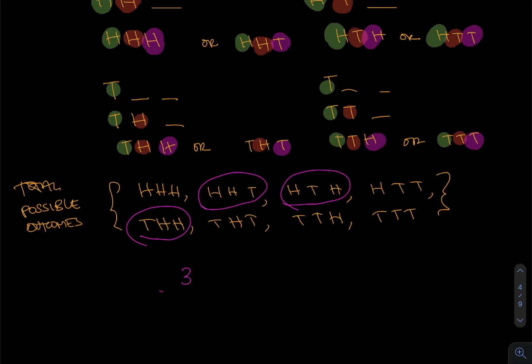So we have the three that we want in the numerator, the favorable outcomes, just a reminder of notation, the probability, over the total of eight possible outcomes. Our total possible outcomes is eight. And so the answer for getting exactly two heads when you flip a coin three times is three-eighths.